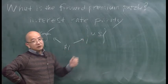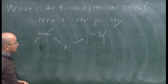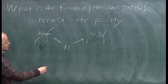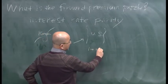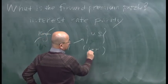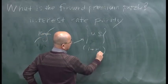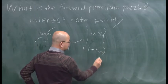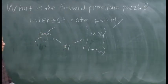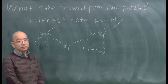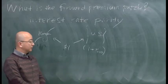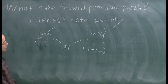What is the effective return from investing in the U.S.? If you invest one dollar in the U.S., one year later you will get one dollar plus the U.S. dollar interest rate paid by the U.S. bank.